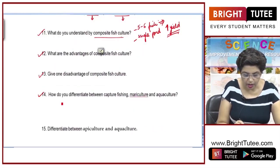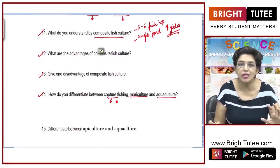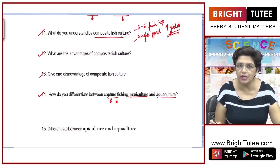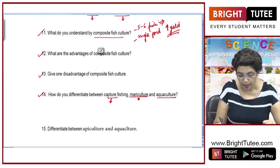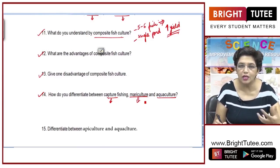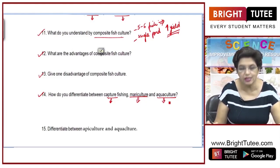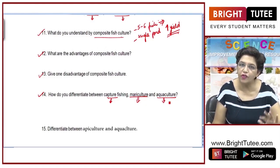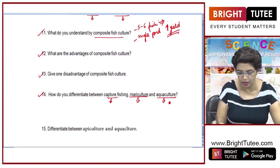Next question: how do you differentiate between capture fishing, mariculture, and aquaculture? Capture fishing means just capturing fish that are naturally growing, whether in inland water resources or in the sea. Mariculture means the culture of fish in seas or oceans. Aquaculture means the culture of fish in freshwater sources like ponds or rivers. These two — mariculture and aquaculture — are examples of fish culture.